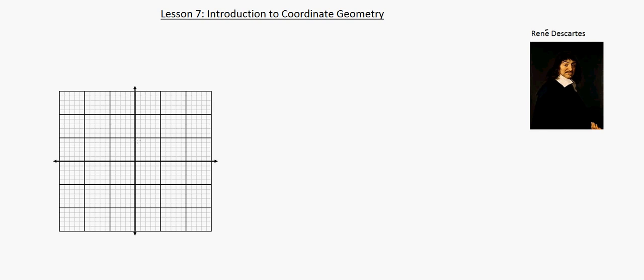It's basically a coordinate system - a type of system which uses one or more numbers or coordinates to uniquely determine the position of a point. A basic coordinate system would be a number line - not many people know that but that's where it originally came from. So we'll now label these axes. This is the y-axis, and this is the x-axis. And this is the origin - this is where the y-axis and the x-axis cross.